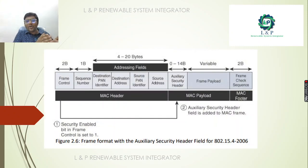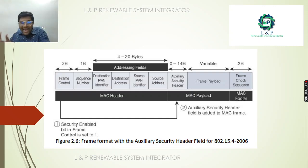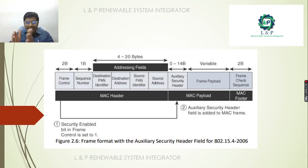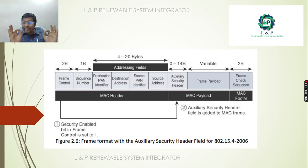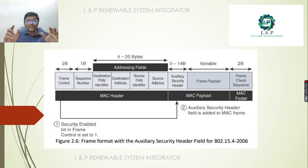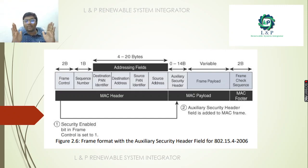The frame format for the auxiliary security header field includes a MAC header and MAC payload. If you set the security-enabled bit in the frame control to 1, then the security feature is enabled, which controls the MAC header and the payload.